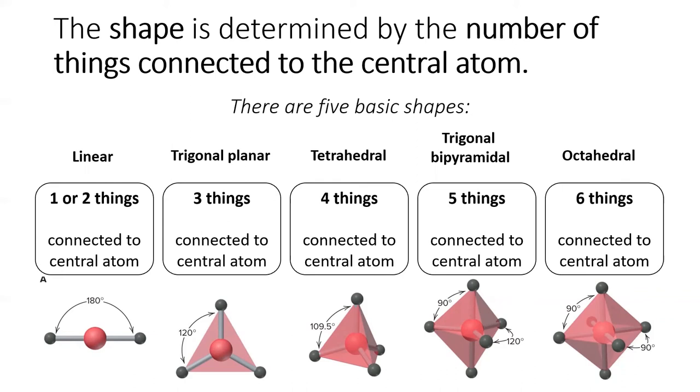When five things are connected to the central atom, the shape is trigonal bipyramidal. Finally, when six things are connected to the central atom, the shape is octahedral, also known as a D8 die to board gamers.